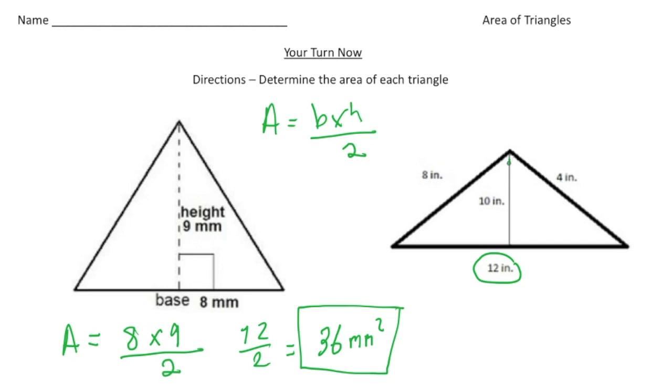So this line right here is going to be the height, because again, it makes a right angle with the base. So when I plug into the formula, area equals the base which is 12, times the height which is 10, and then divide it by 2.